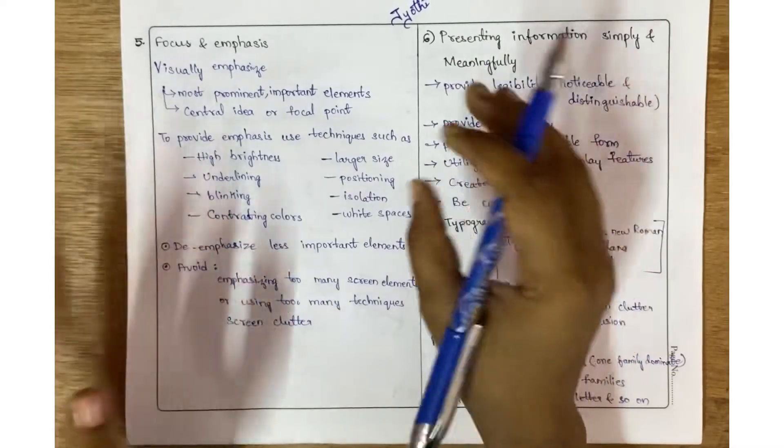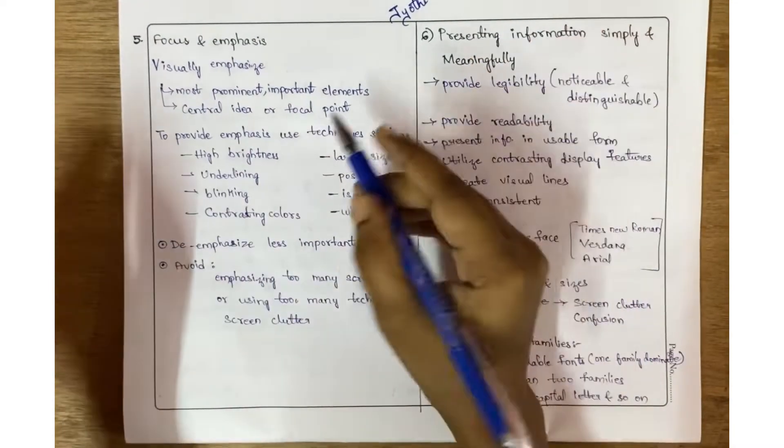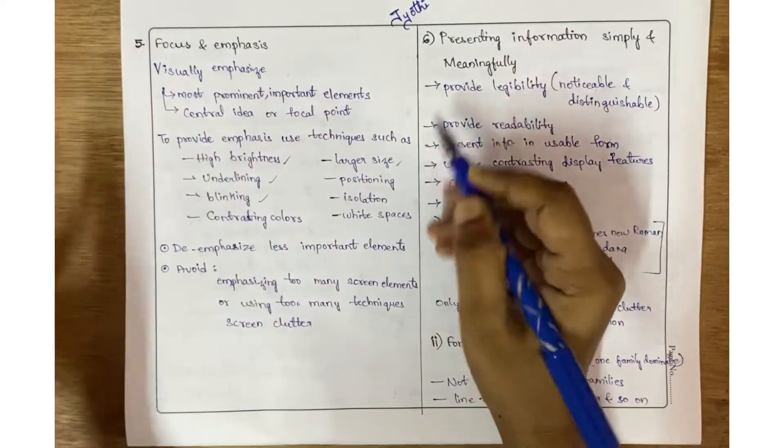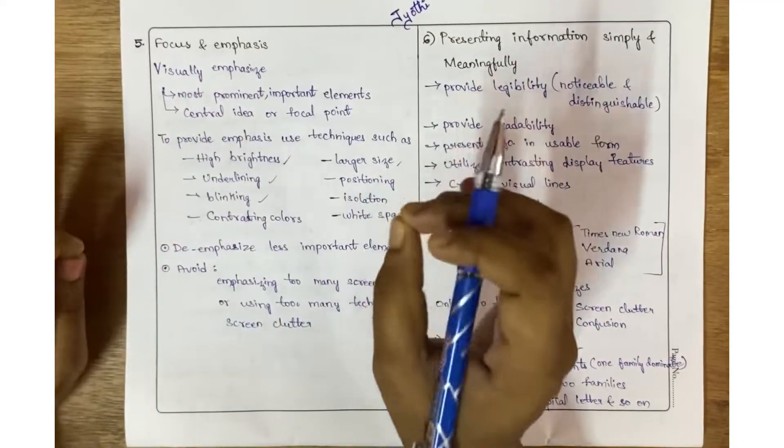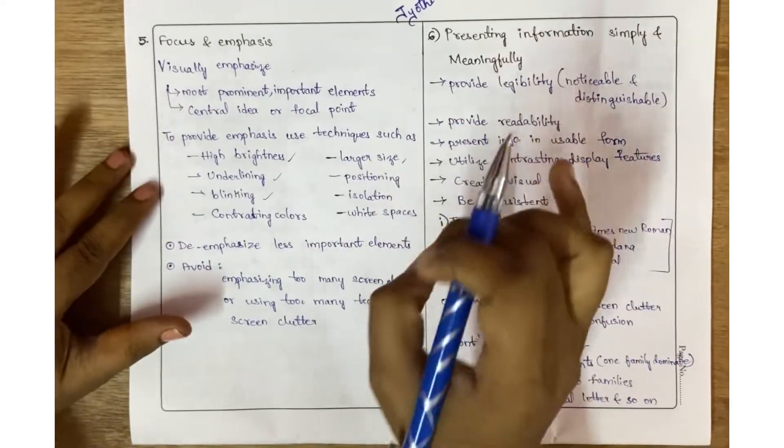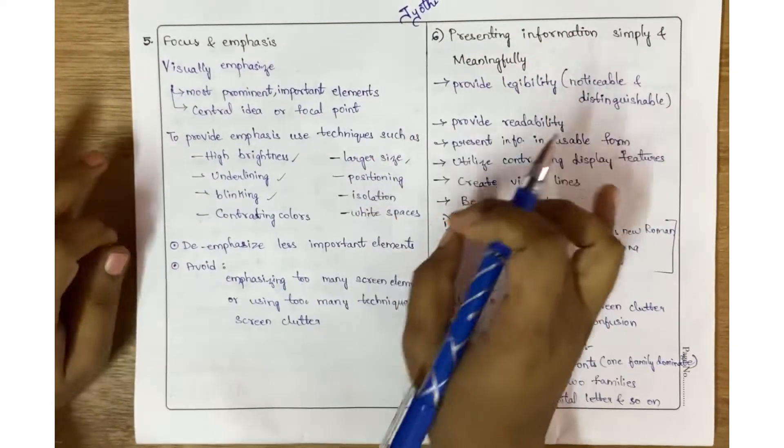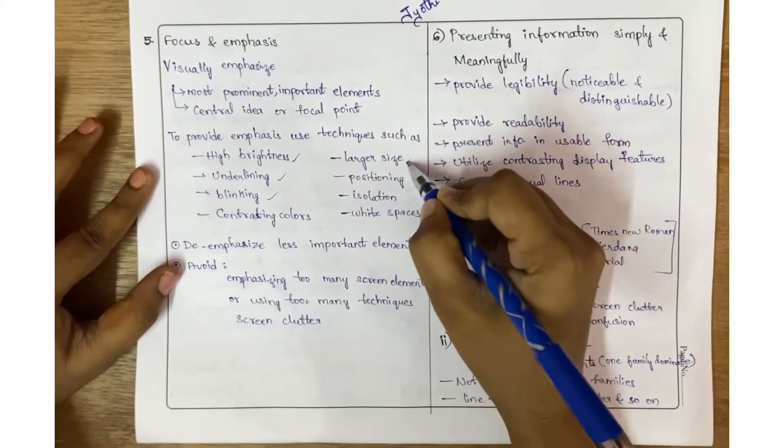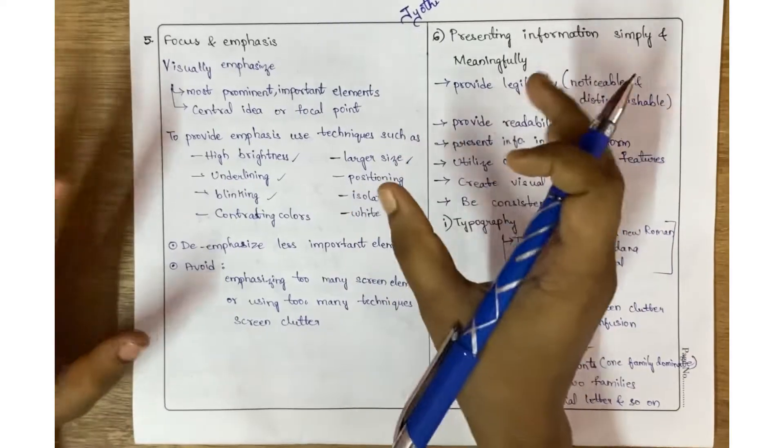To provide emphasis, we need to use techniques such as high brightness, underlining, blinking, contrasting colors, larger size. This means visually people should get attracted and get attention on those things. For that purpose, use techniques like larger size, proper positioning, isolation, and white spaces.